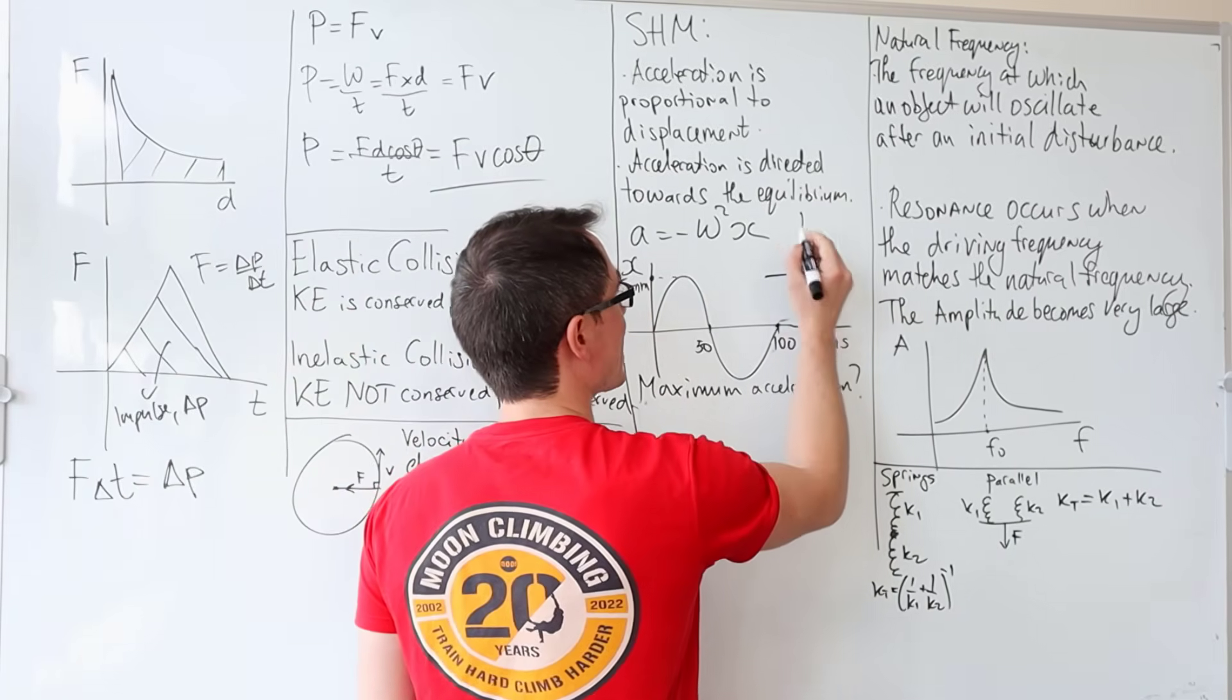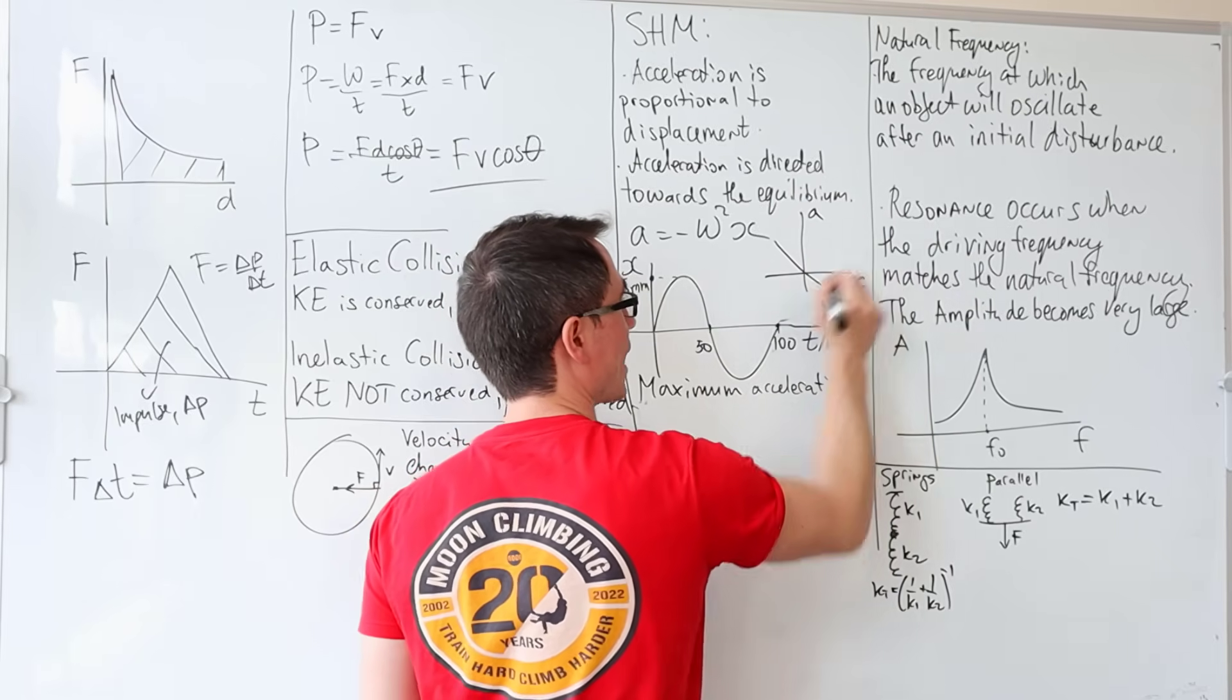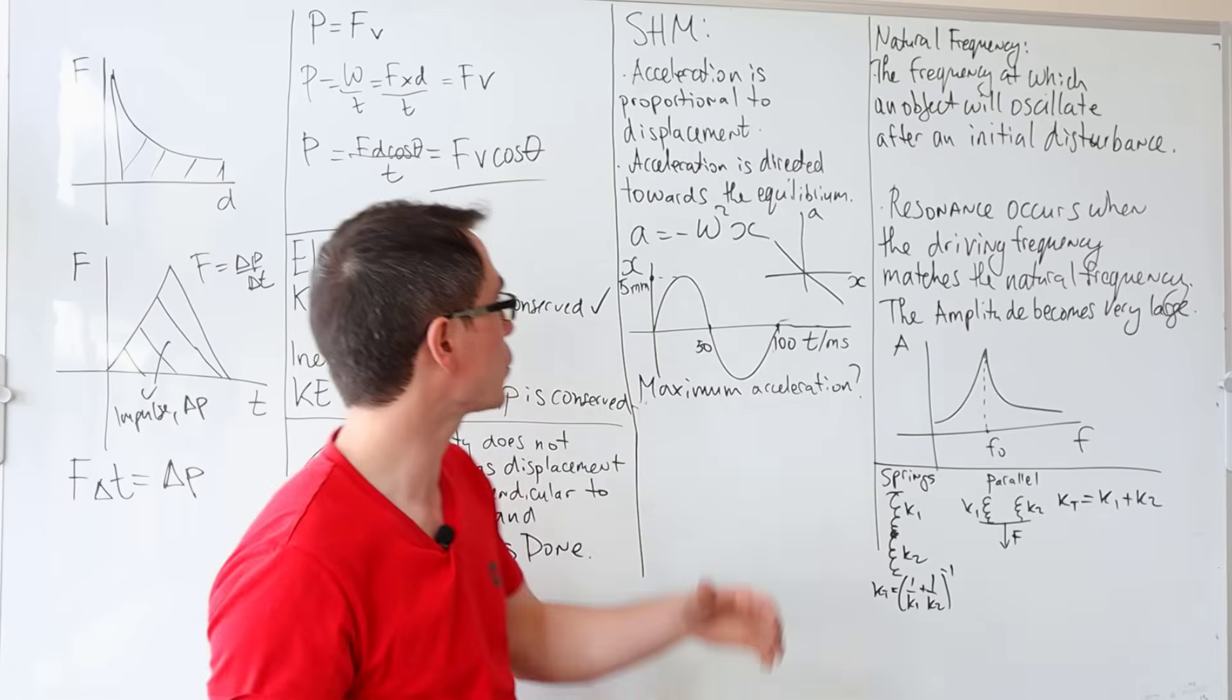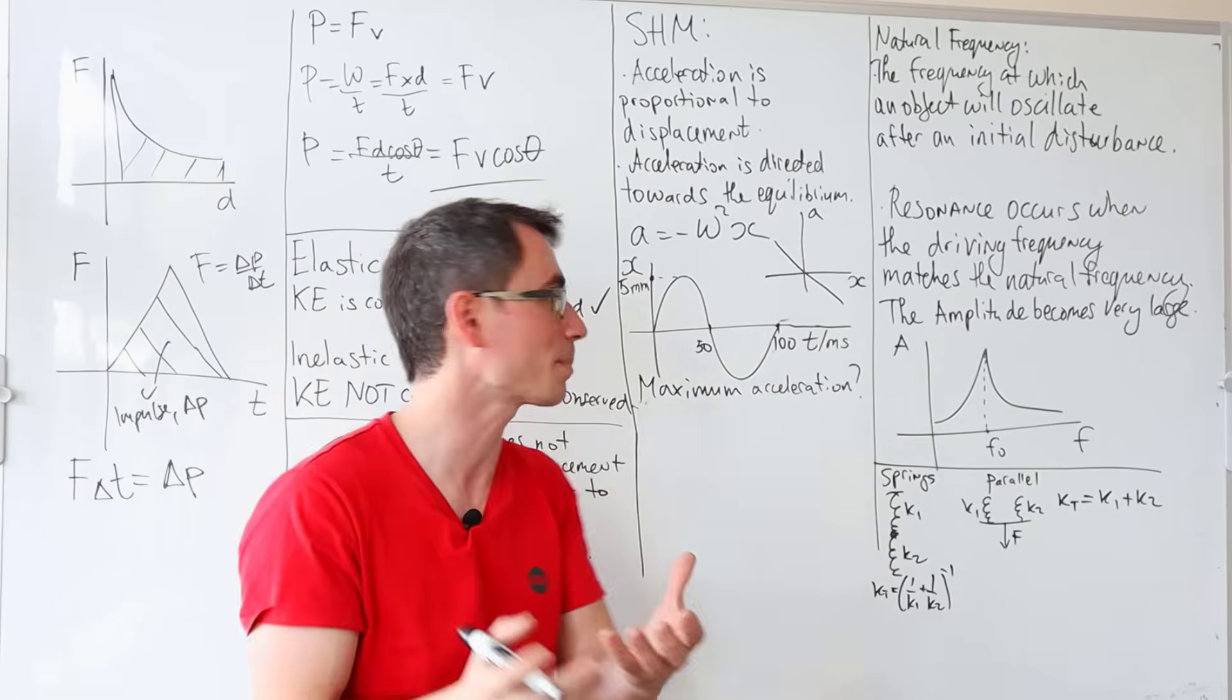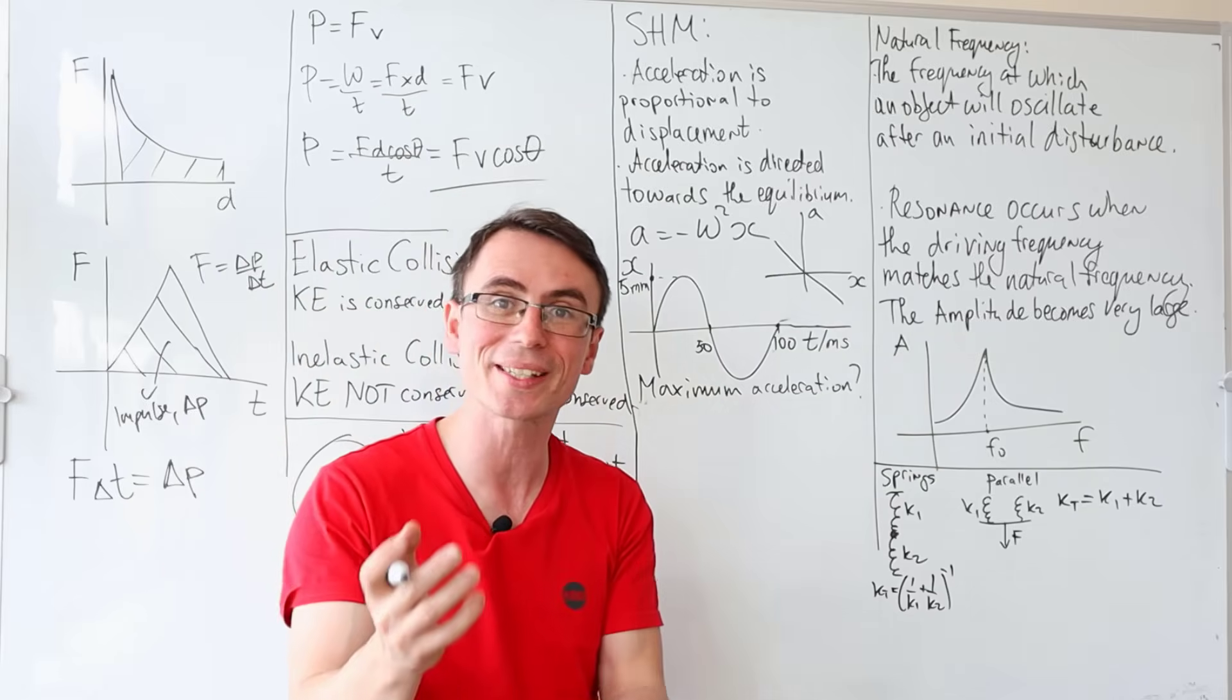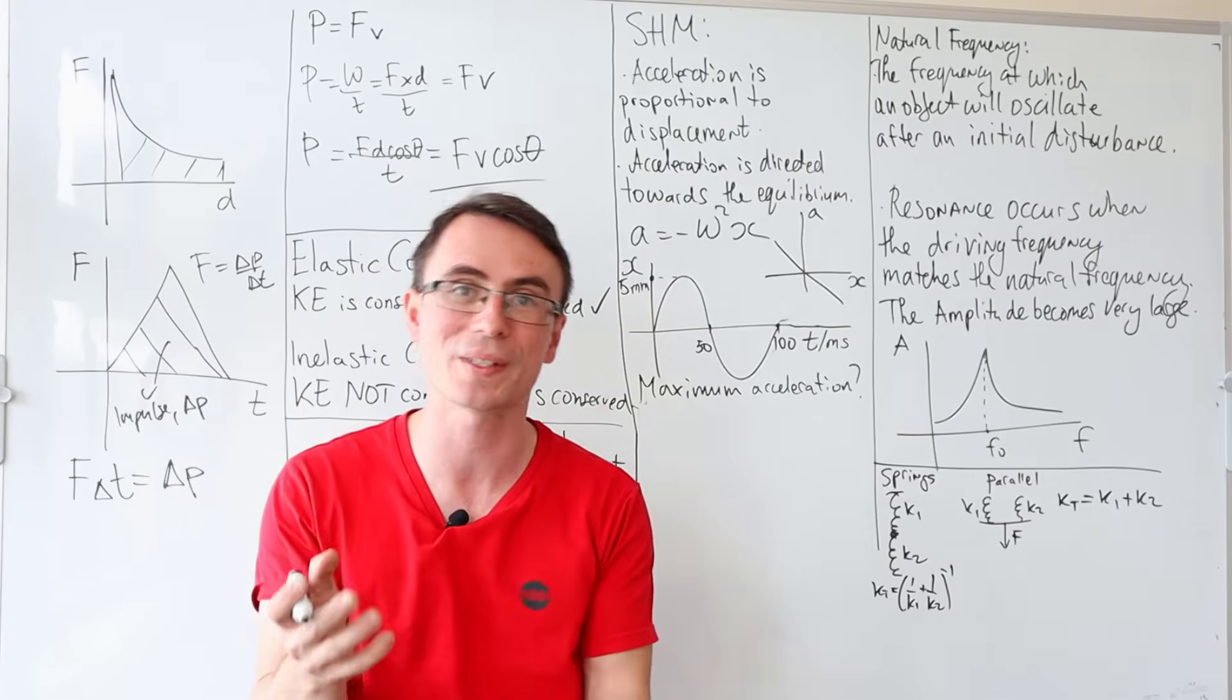You can also get a graph which kind of looks like this, a against x. And the fact that it's a straight line through the origin tells us that the acceleration is proportional to the displacement. And the fact that it has a negative gradient tells us that they're in opposite directions, i.e., directed towards the equilibrium.